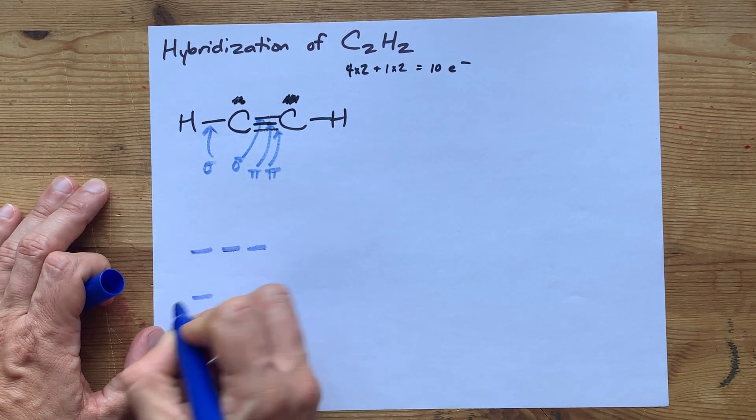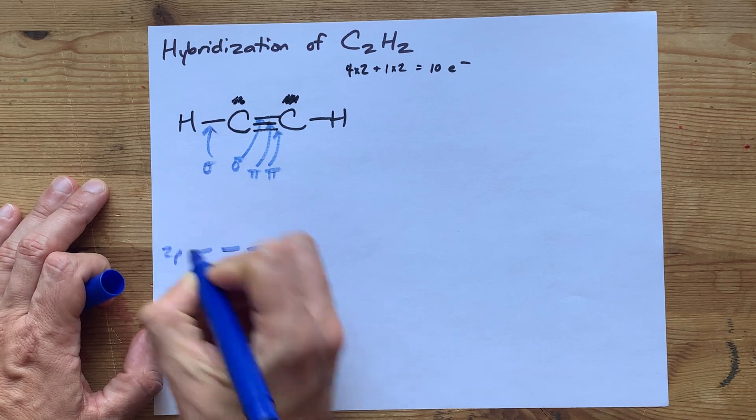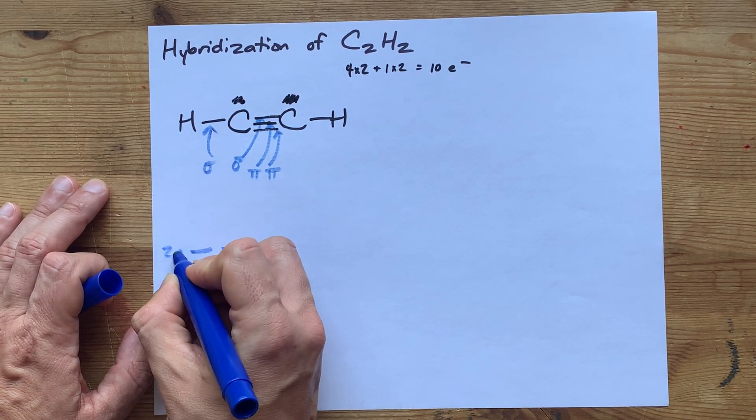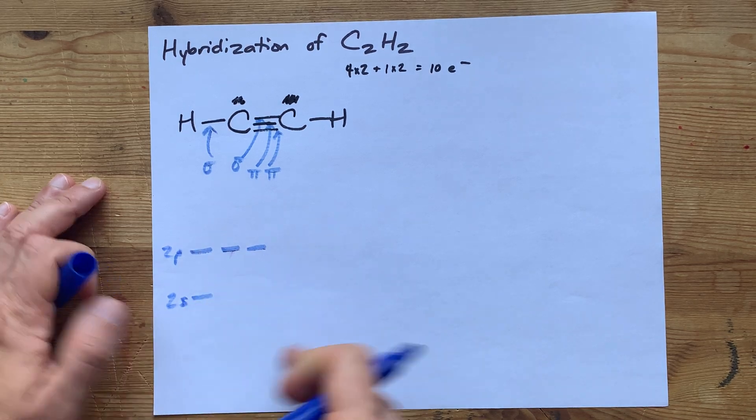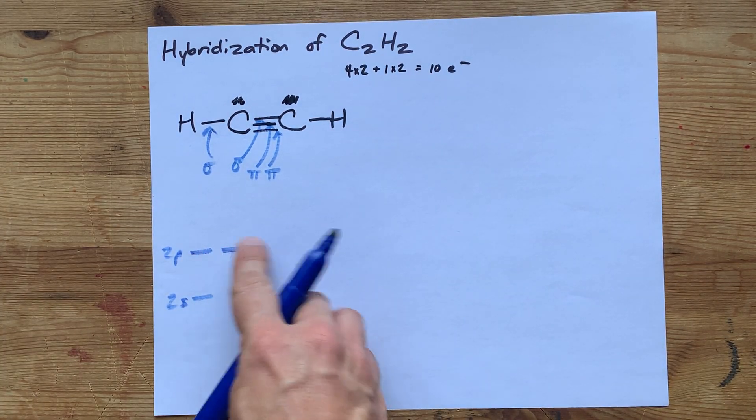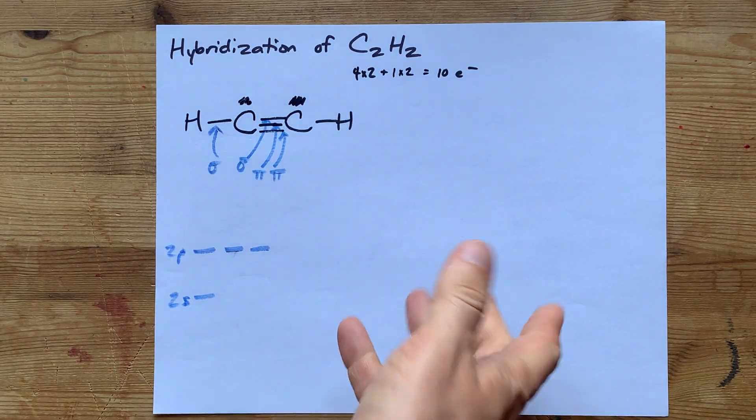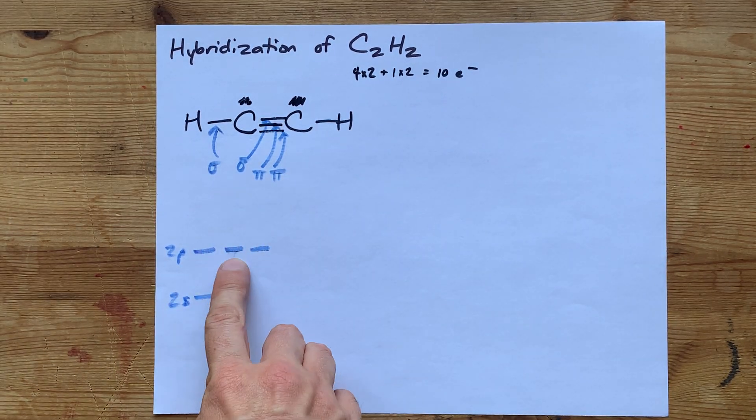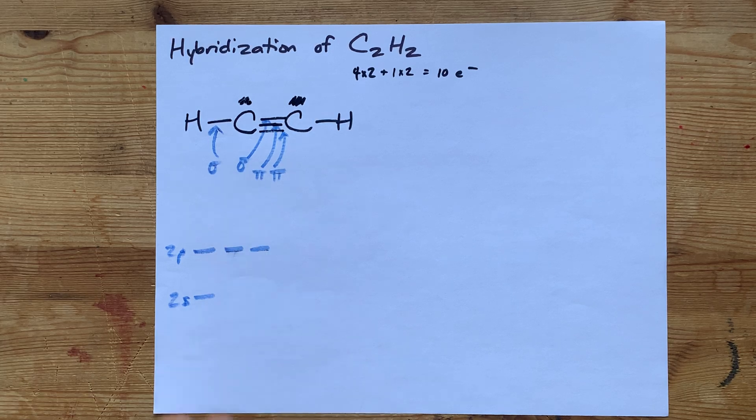I want to remind you that carbon has four orbitals in the second energy level that could hybridize. So the maximum you can get is sp³. But you have to leave behind a 2p orbital for each of the pi bonds.